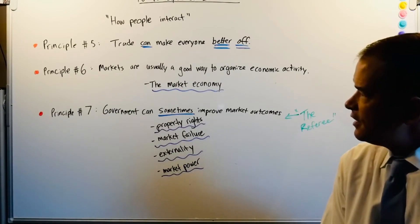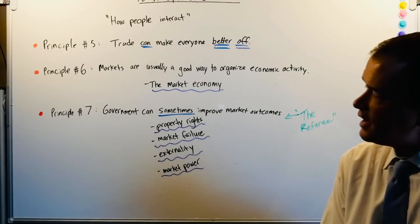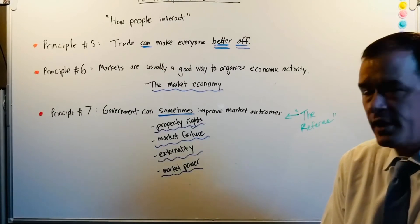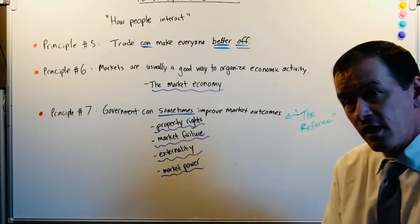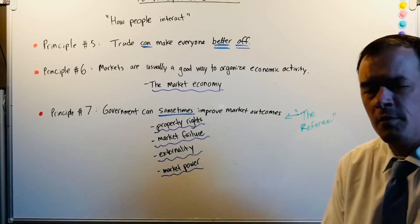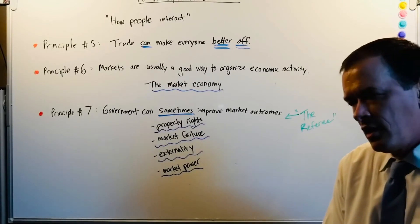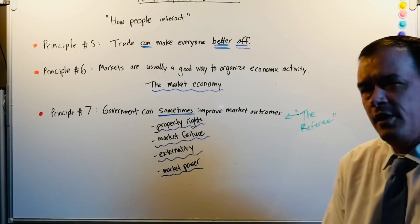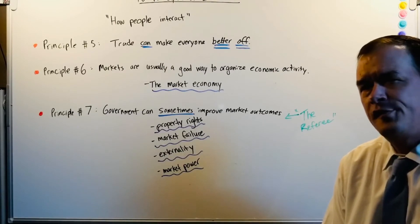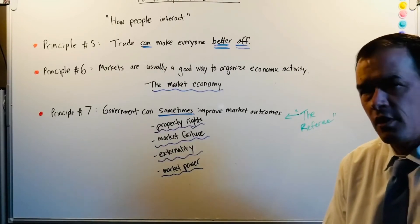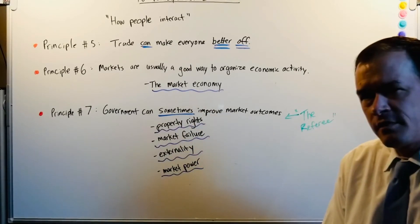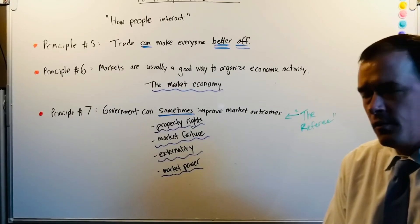The final principle under the heading of how people interact is principle number seven: government can sometimes — and I emphasize sometimes — improve market outcomes. They're the referee. I'm a big sports fan. The best games are when the ref is seen but not heard from a lot. When they're calling a lot of penalties, calling a lot of fouls, affecting the strike zone — that type of thing — it's just not enjoyable to watch.